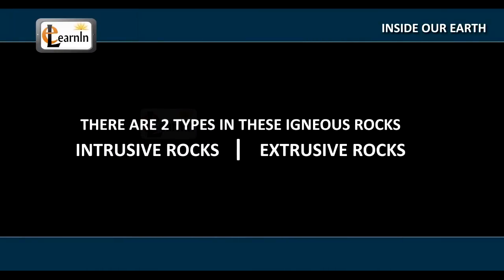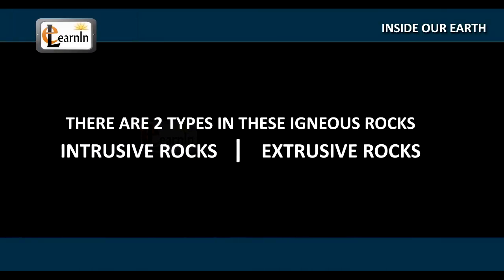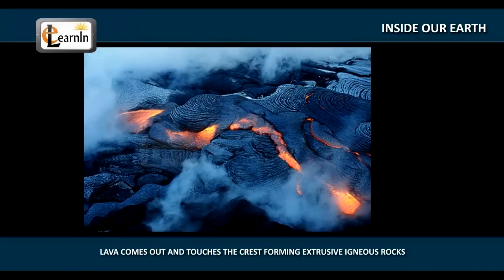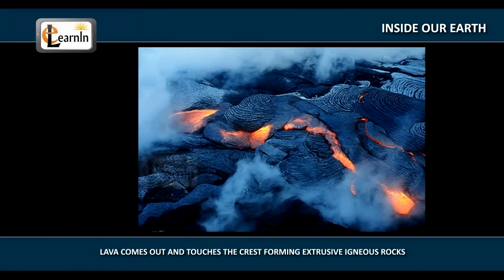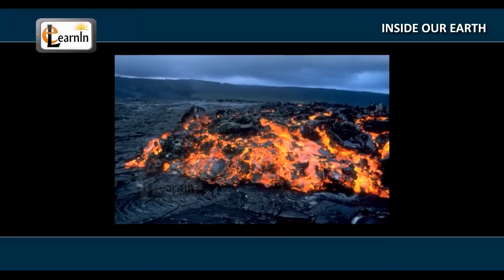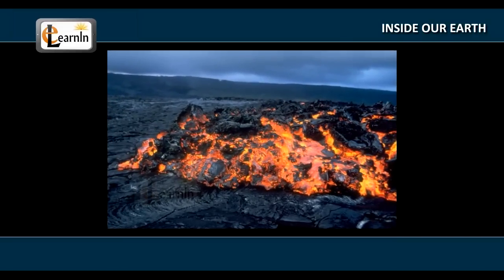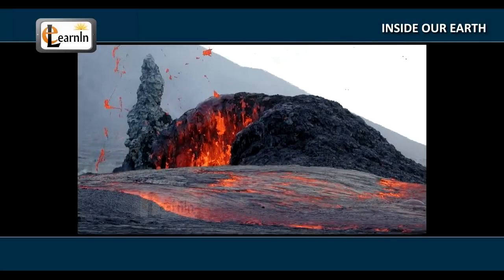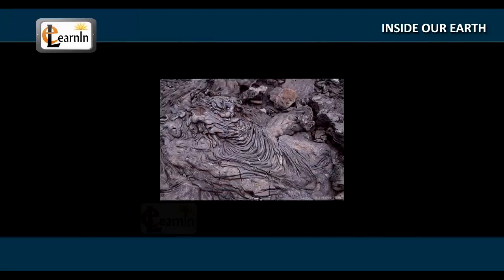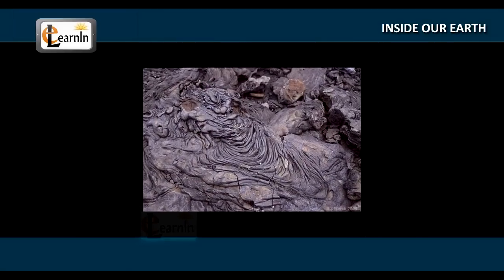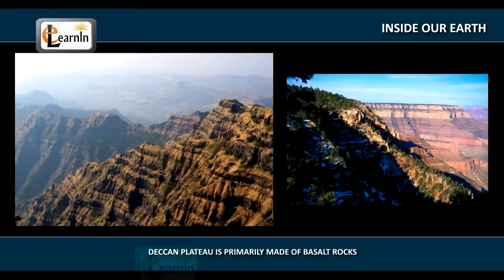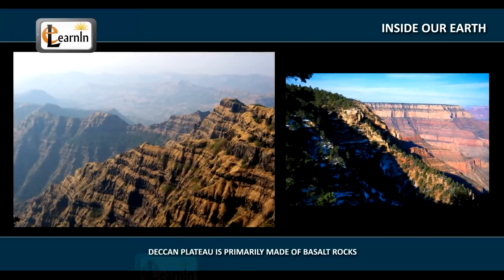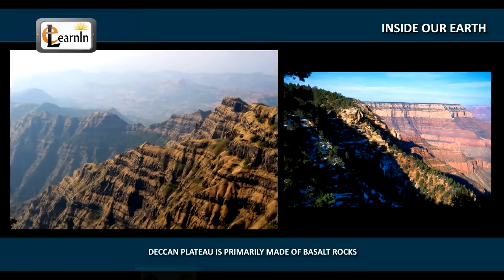They are intrusive and extrusive rocks. The lava, which is a fiery molten magma that comes out of the volcano, becomes hard when it touches the crust, forming extrusive igneous rocks. They have a very fine-grained structure; one of the examples is basalt. The Deccan plateau is primarily made up of basalt rocks.